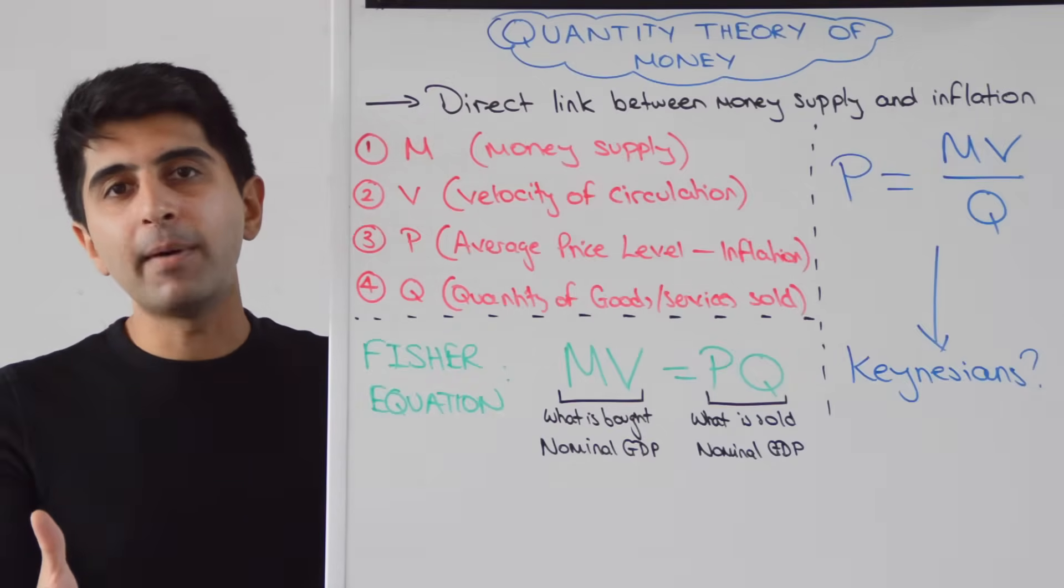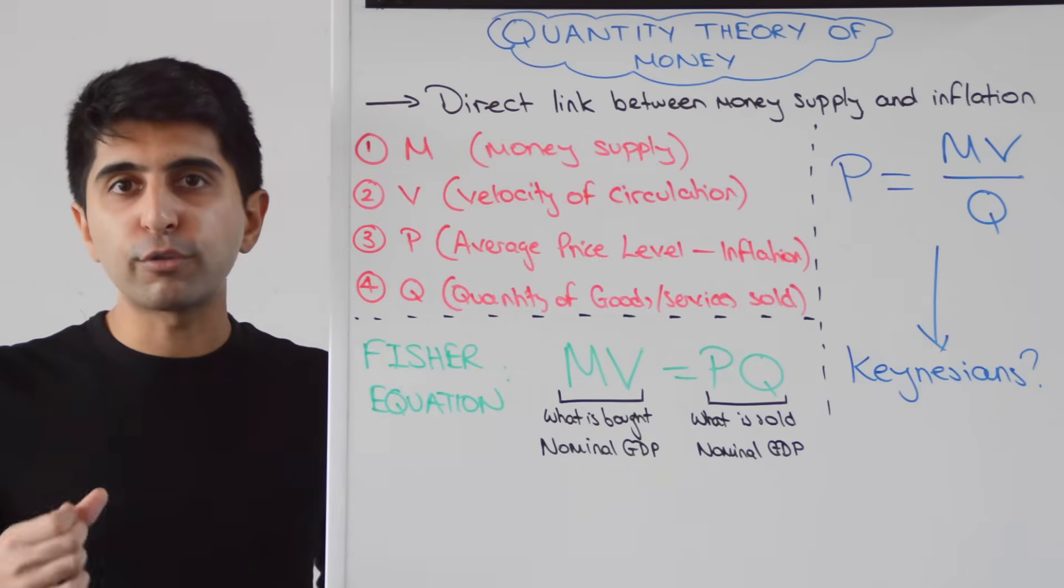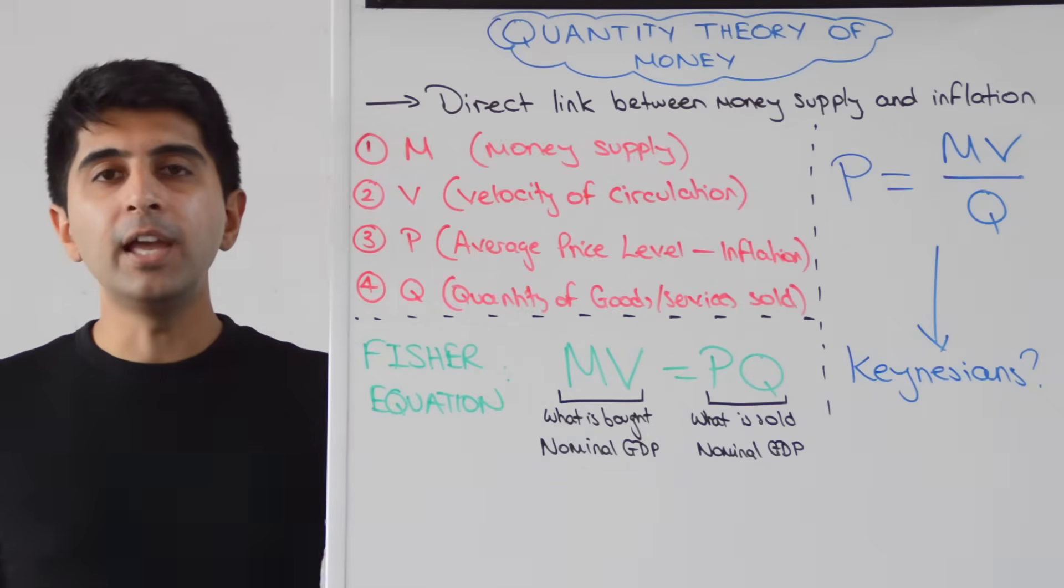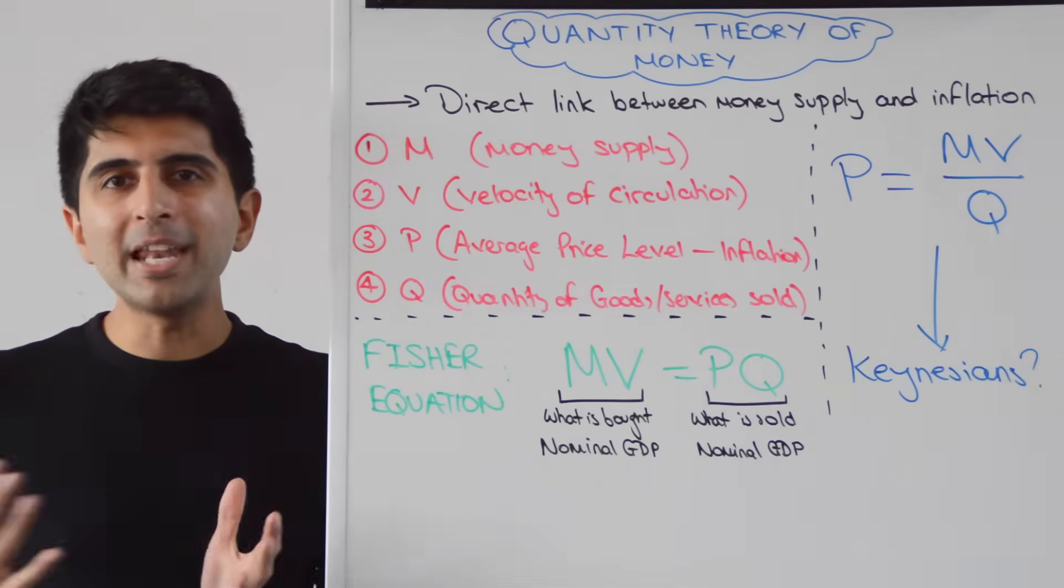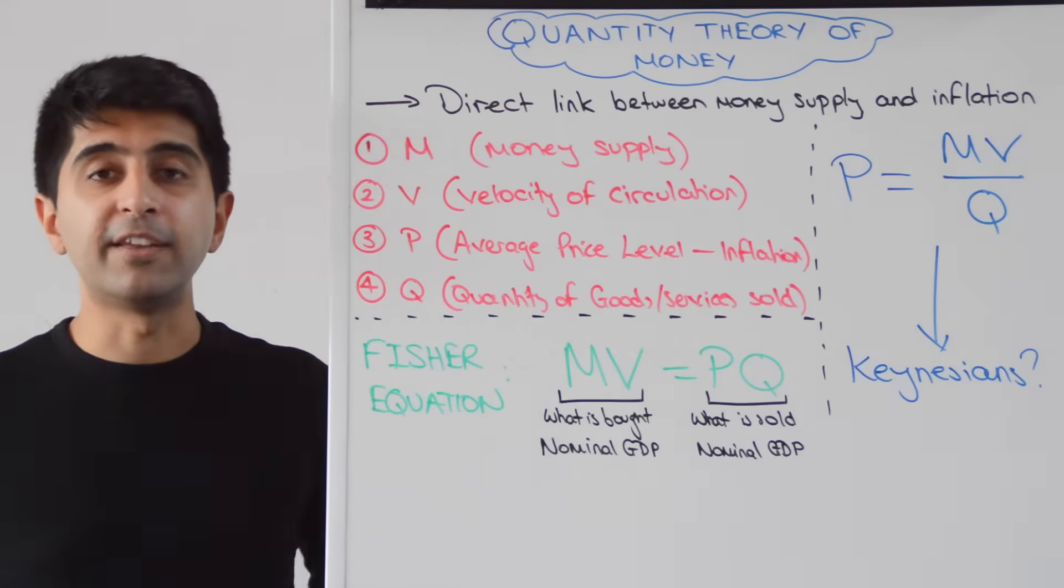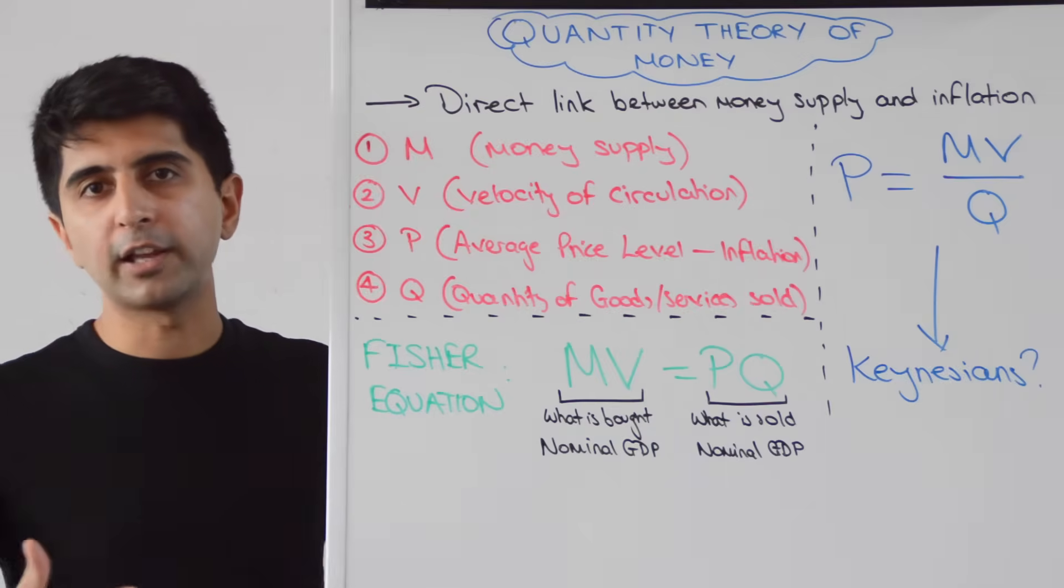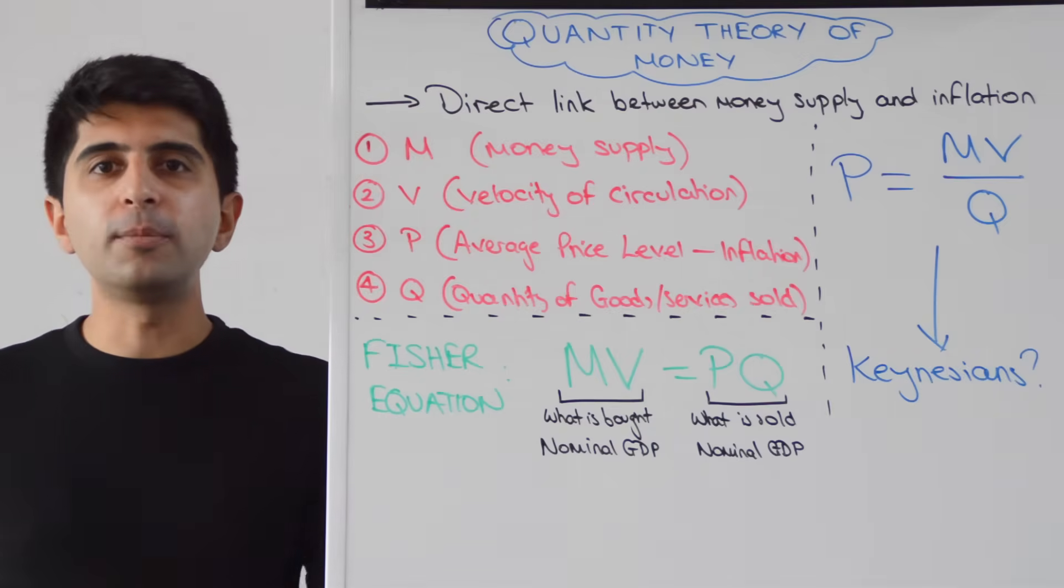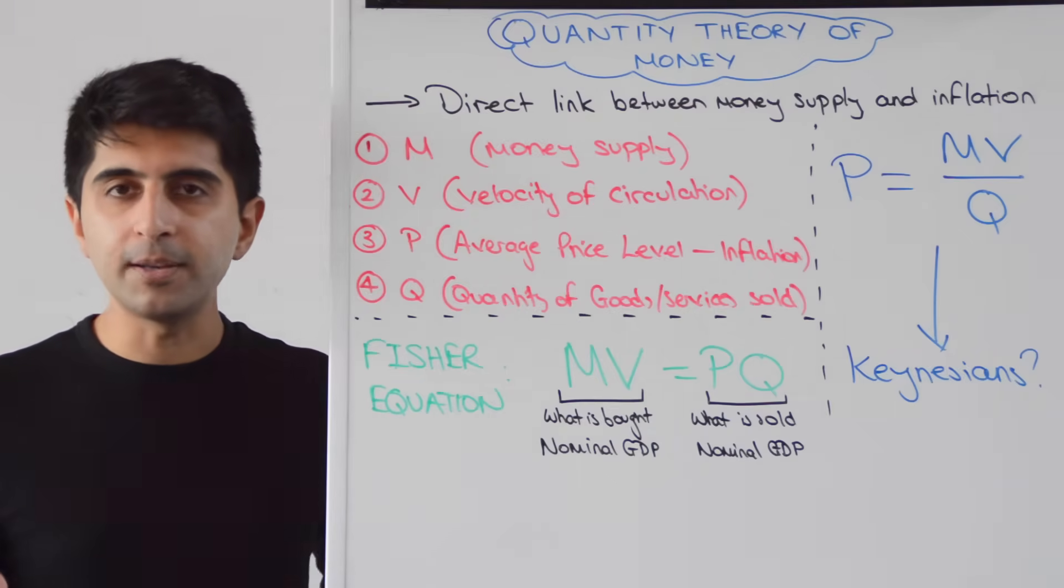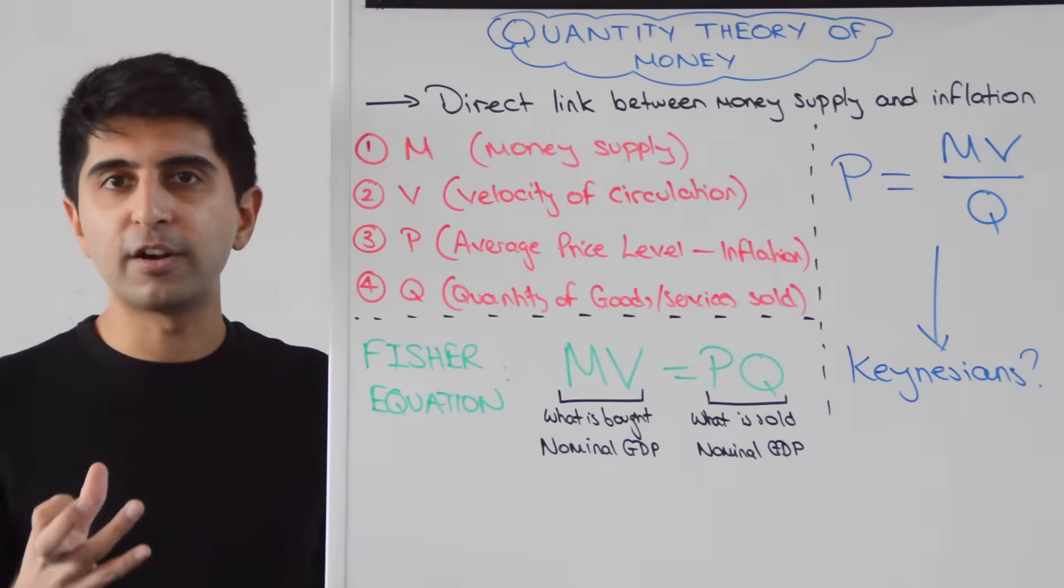Hi everybody, the quantity theory of money is a theory that links growth rates in the money supply to growth rates in prices, i.e. inflation. It's a theory that's been around for many, many years, hundreds of years, going back to the 16th century. But it's been reinvigorated in the 20th century by economists like Irving Fisher, but most notably monetarists like Milton Friedman, who said that inflation is always and everywhere a monetary phenomenon.